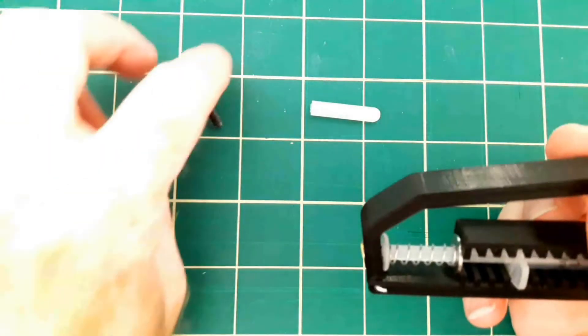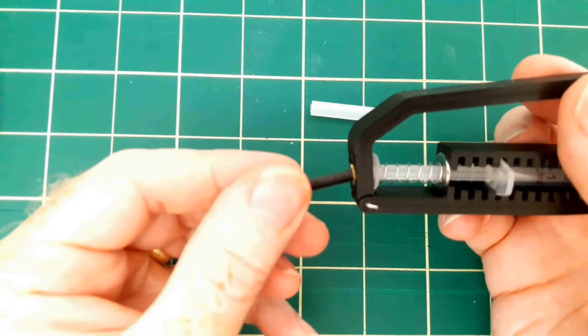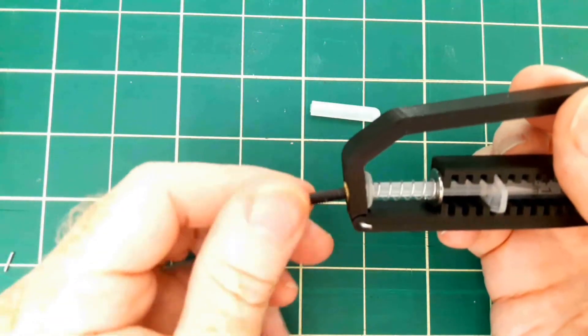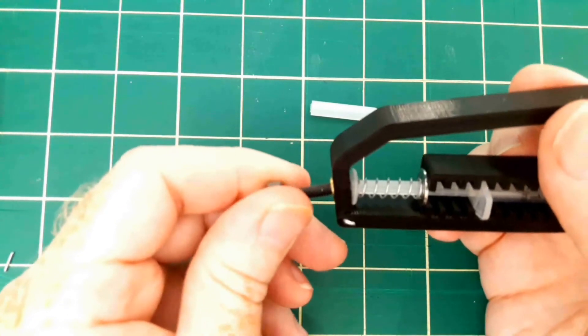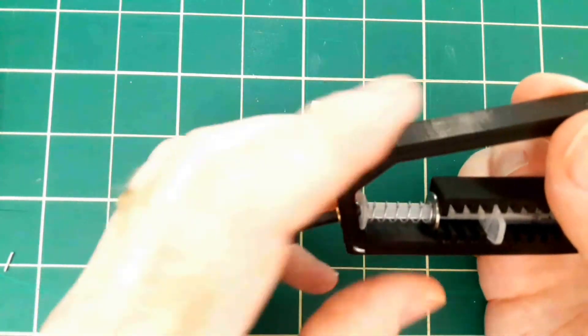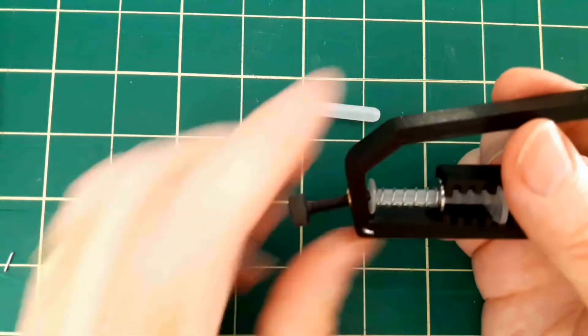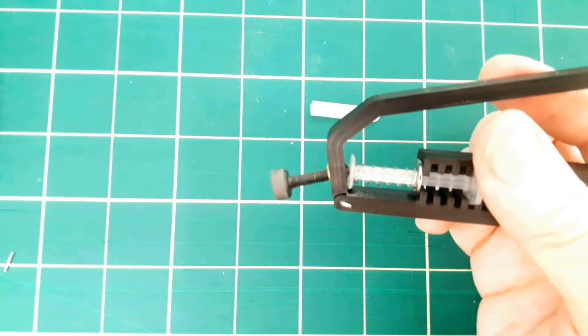And then we have this nylon 8-32 thumb screw with a knurled head that we're going to screw into this threaded insert and this will allow us to adjust the pressure on the plunger as we dispense solder paste through here.